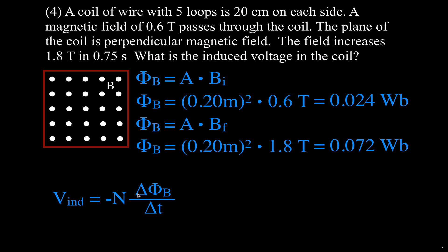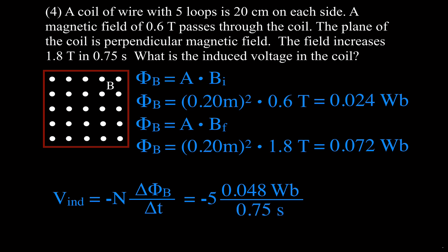Plugging into the equation: five loops, the change in flux is final minus initial = 0.072 − 0.024 = 0.048 Webers, and that change occurs over 0.75 seconds. Multiplying five by 0.048 and dividing by 0.75, we get an induced voltage of −0.32 volts in that red coil of wire.